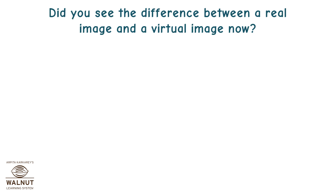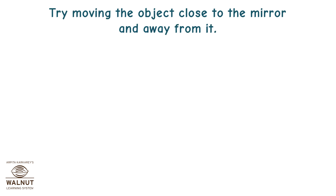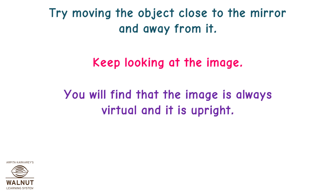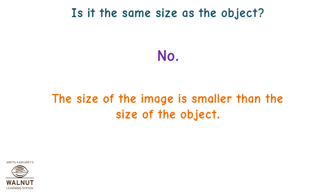Did you see the difference between a real image and a virtual image? Now repeat the activity with a convex mirror. Try moving the object close to the mirror and then away from it, and keep looking at the image. You will find that the image is always virtual and upright. The size of the image is always smaller than the size of the object.